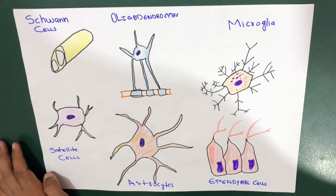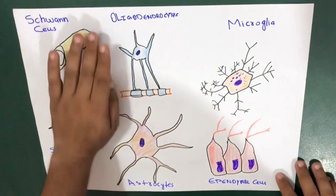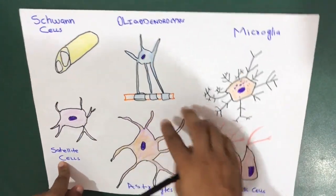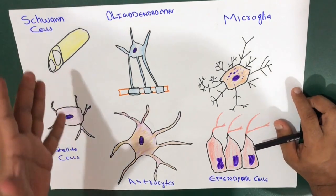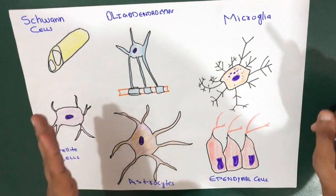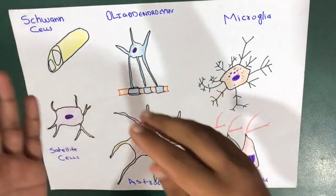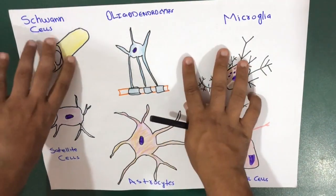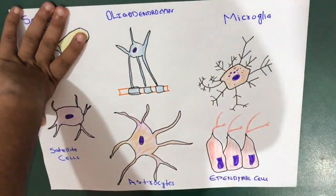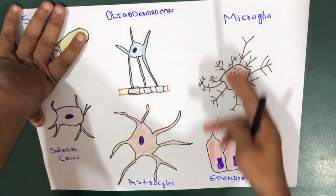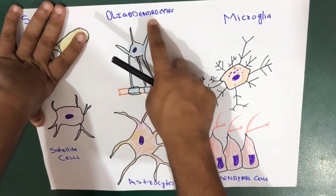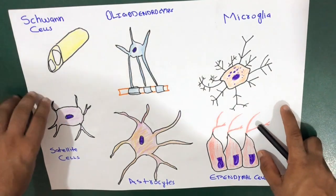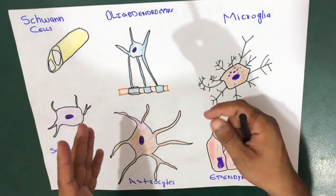In the central nervous system, we have four neuroglial cells. Schwann cells and satellite cells are included in the neuroglial cells of the peripheral nervous system. So if asked what neuroglial cells are found in the peripheral nervous system, the answer is Schwann cells and satellite cells. For the central nervous system, the answer is oligodendrocytes, microglia, astrocytes, and ependymal cells.